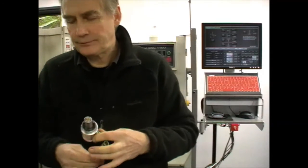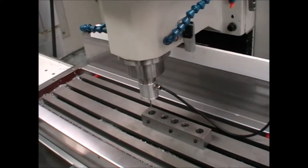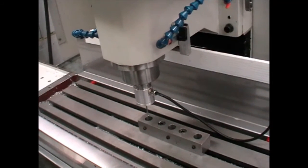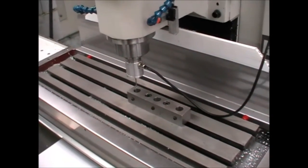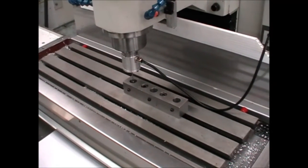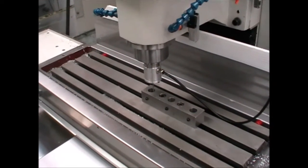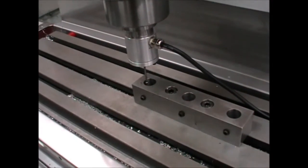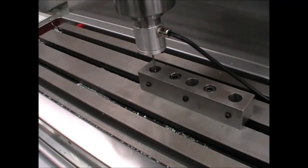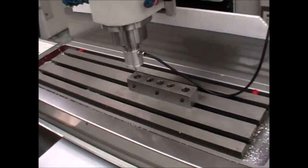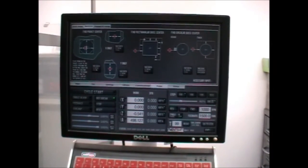Probing is a great way to set your machine to your work, whether it's a bore or a block, the edge, corner, or the center of a boss. You can just quickly jog into position, use your control software to conduct a probing routine, and find the center or edge very quickly. Control software such as PathPilot or Mach3 have very good facilities to allow you to quickly set your machine to work.